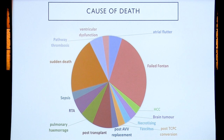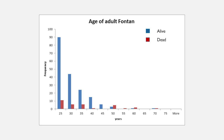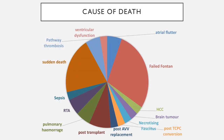I thought it would be interesting to review the causes of death in those patients. We've had patients die following road traffic accidents, sepsis, and one patient die of necrotizing fasciitis. We've had a couple who died post-surgical intervention — one died post-TCPC conversion. We've only done 10 TCPC conversions in about 140 AP Fontans in the adult population. We've done one AV valve replacement in adult life and sadly that patient died. We've had two deaths post-transplantation — both were transplanted in Newcastle. There are only two pediatric transplant centers in the UK. We do adult transplants only in Birmingham, and we have transplanted nine patients in-house, all of whom have survived and are doing well.